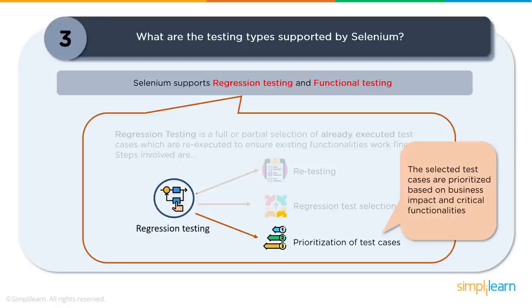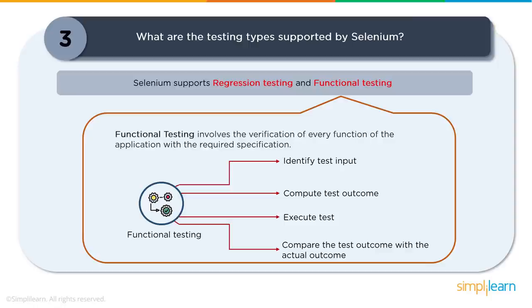You can also prioritize test cases based on critical functionalities and business impact. The second category is functional testing, which includes smoke tests, sanity tests, install tests, and database tests. The typical flow involves identification of test inputs, deriving expected outputs, designing and executing test cases, and then asserting expected versus actual outcomes.